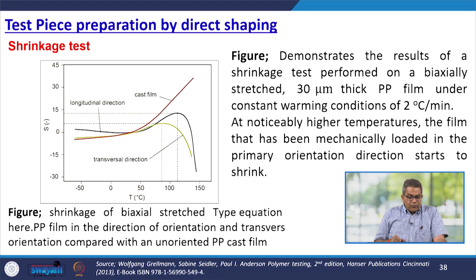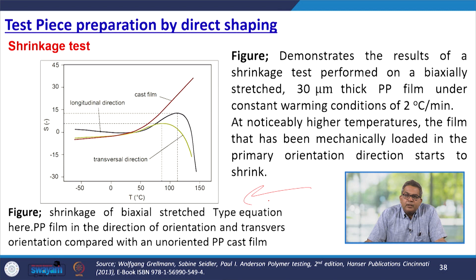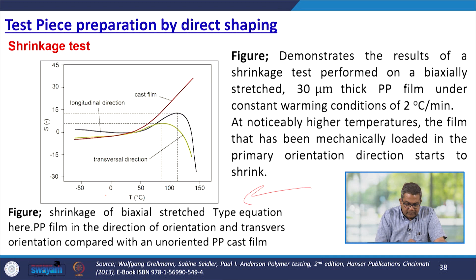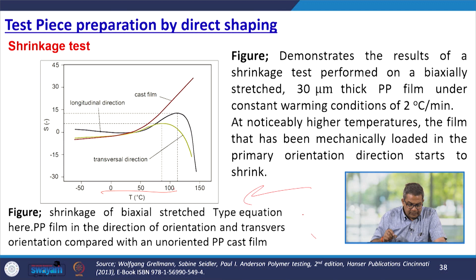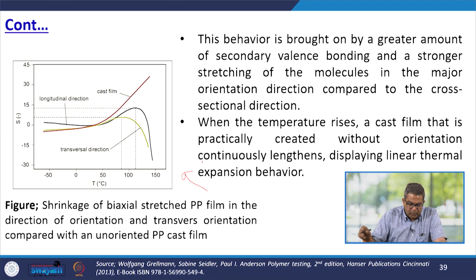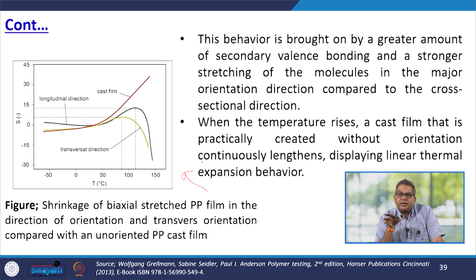A shrinkage test was performed on a biaxially stressed 30-micrometre thick polypropylene film under constant warming conditions of 2°C per minute. At a noticeable high temperature, the film — mechanically loaded in the primary orientation direction — starts to shrink. This figure represents the shrinkage of biaxially stretched polypropylene film in the direction of orientation and transverse to orientation compared with an unoriented PP cast film. This behaviour is brought on by the greater amount of secondary valence bonding and stronger stretching of the molecule in the major orientation direction compared to the cross-sectional direction.